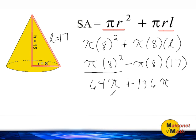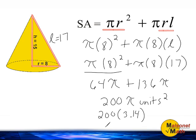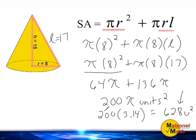Now we have two like terms we can combine: 64 pi plus 136 pi is 200 pi. And because no specific units were given, I'll write unit squared. If you were asked to solve in terms of pi, our answer would be 200 pi units squared. If you were asked to find the surface area using 3.14 for pi, you would take 200 and multiply by 3.14, giving you 628 square units.